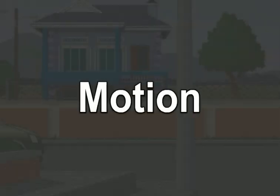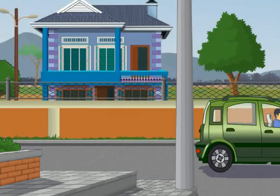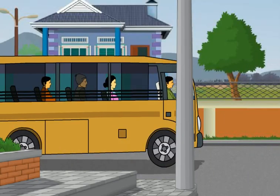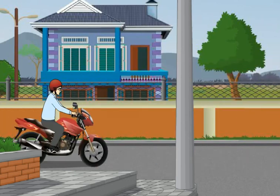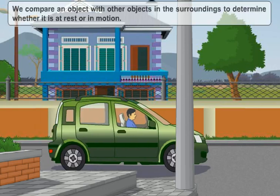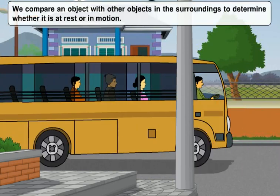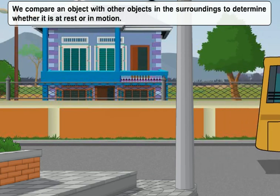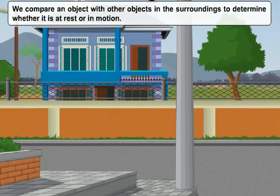Dear students, now let us study about motion. Let us start with rest and motion. In our daily life we see many objects. Some of them are at rest and others are in motion. We compare an object with other objects in the surroundings to determine whether it is at rest or in motion.